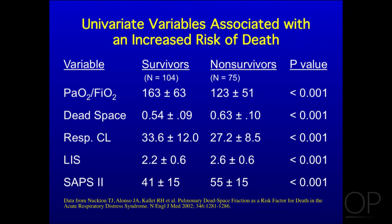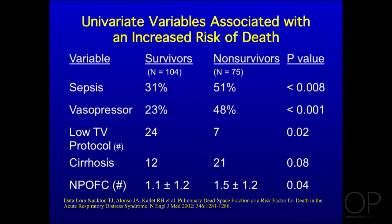The PF ratio was lower in non-survivors. The dead space was 0.63 in non-survivors and 0.54 in survivors. Respiratory compliance was lower in those who died. Lung injury score was higher in those who died. SAPS II was higher. Sepsis was higher — 51% versus 31% in those who died. Vasopressor use was about twice higher. The low tidal volume protocol was just making its way into clinical practice, with just 31 patients, but it was more common in survivors.